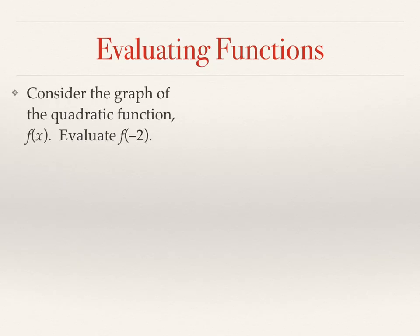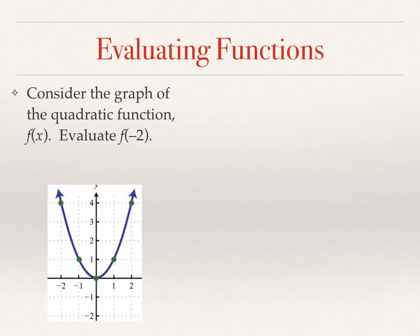Consider the graph of the quadratic function f of x. We're asked to evaluate f of negative 2. Now that means find the value of the function at an x value of negative 2. So please look at your x axis, go over to negative 2, and go up. What is the corresponding y value? That's what we're asking you to do here. So the answer to the question is f of negative 2 equals 4.